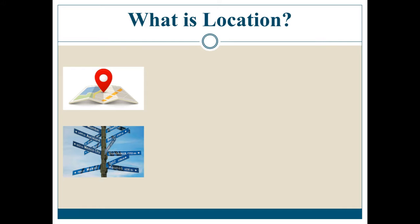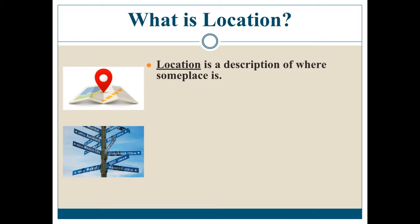What is location happens to be our essential question. It also happens to be our first left side question. There's more than one way to define it — that may seem strange to you, but that's the truth. There are three definitions of location I would like you to know, and the first is the simplest: location is a description of where someplace is. It answers the question, where is it?